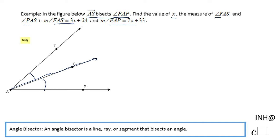Let's take a look at what is given to us. The measure of angle FAS is 3x + 24. Be careful, the next thing given to us is the measure of angle FAP.